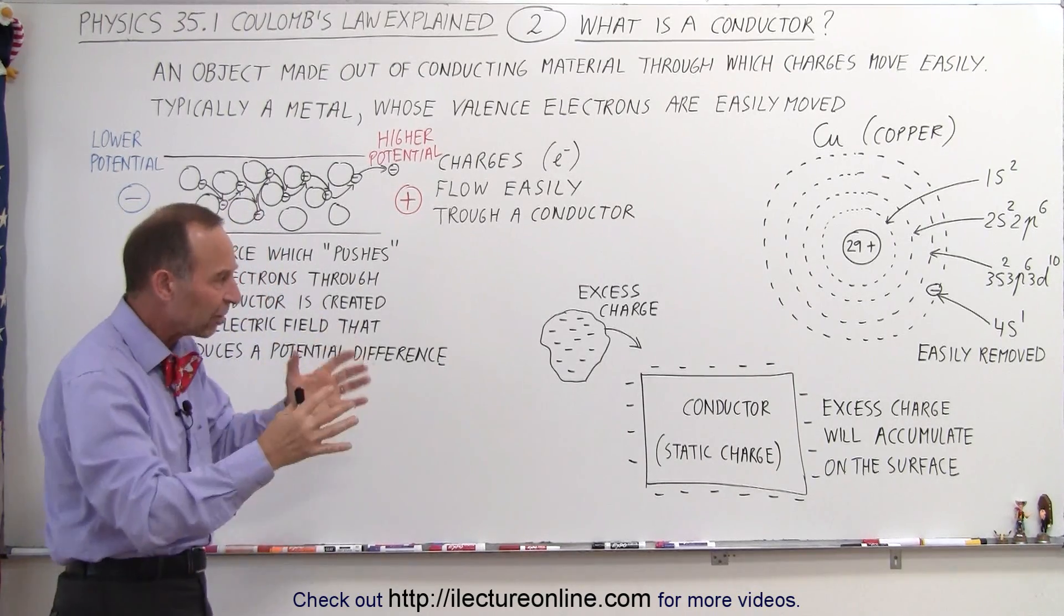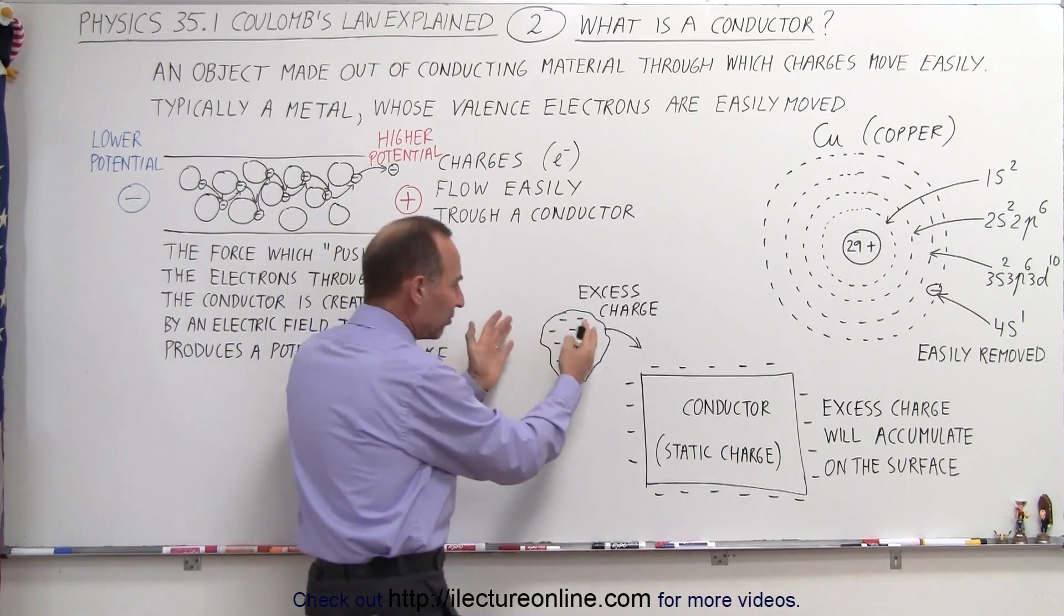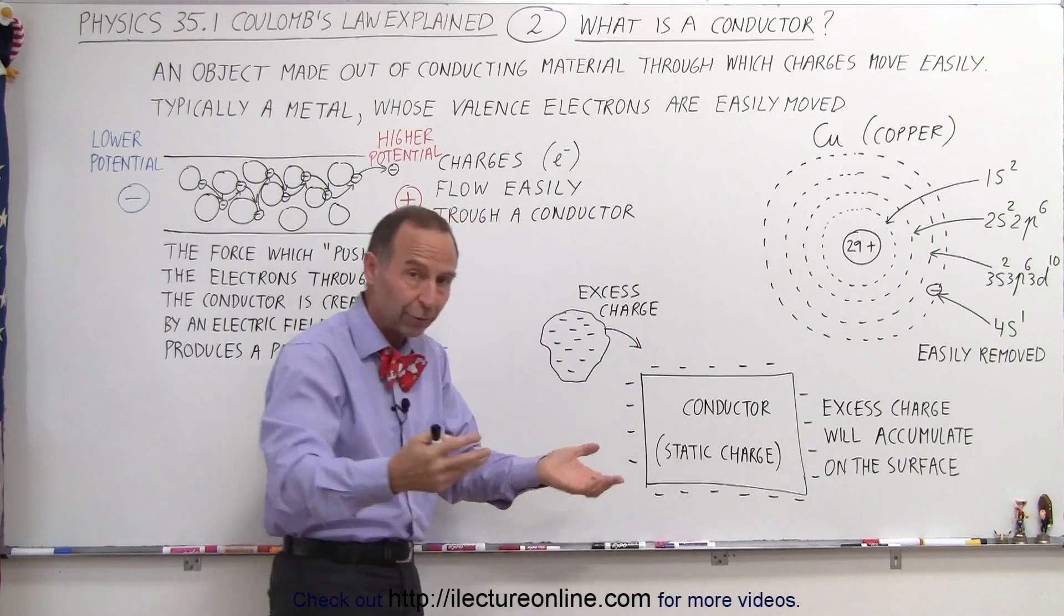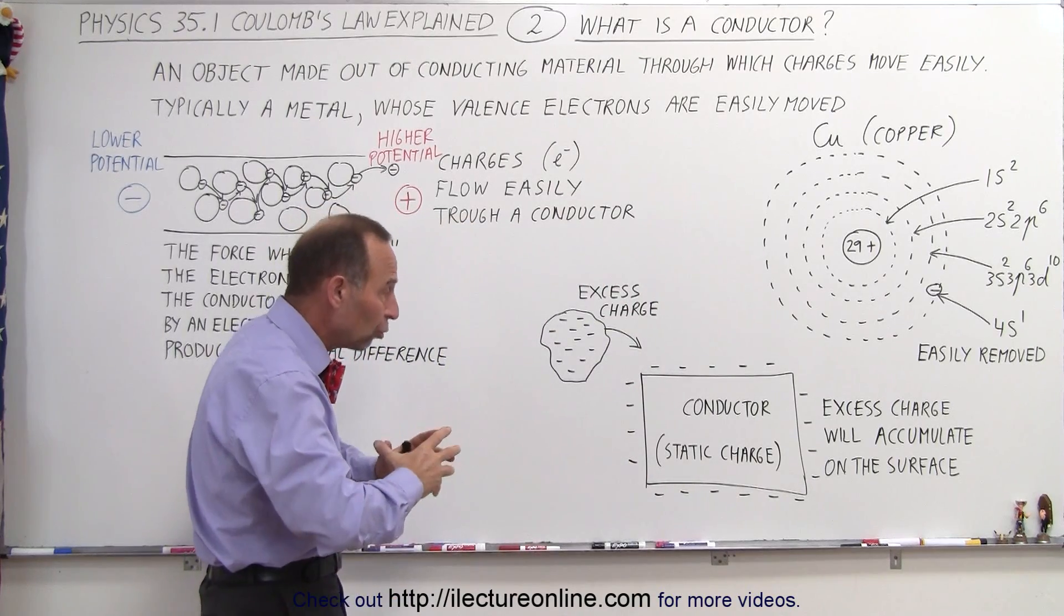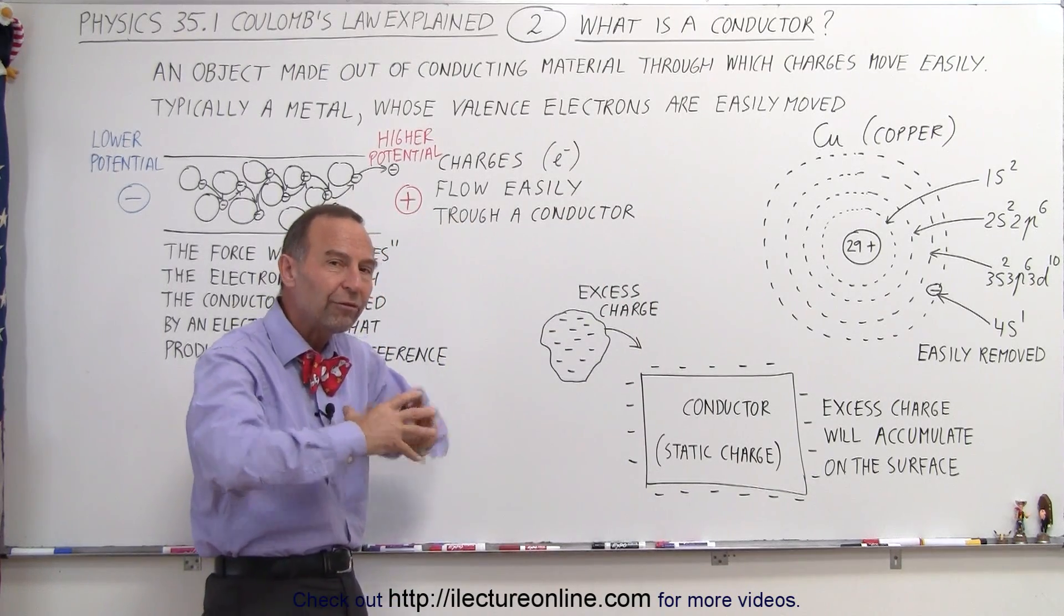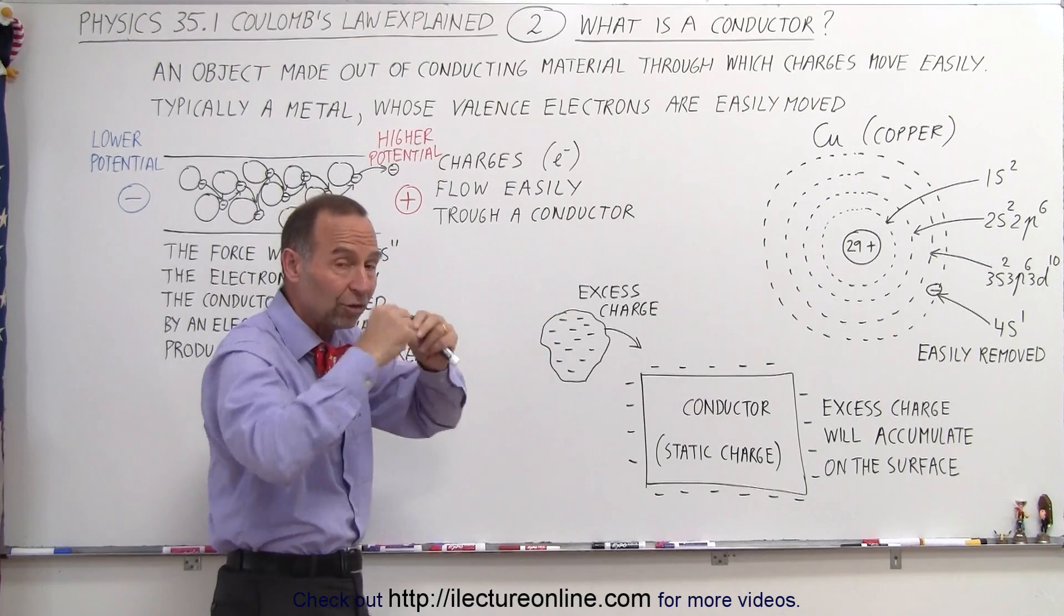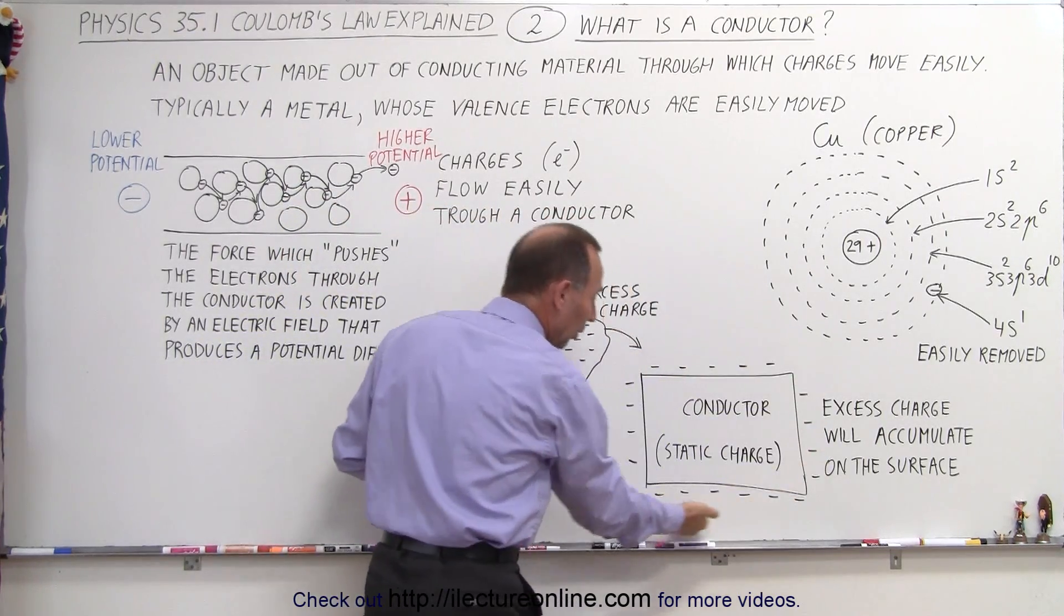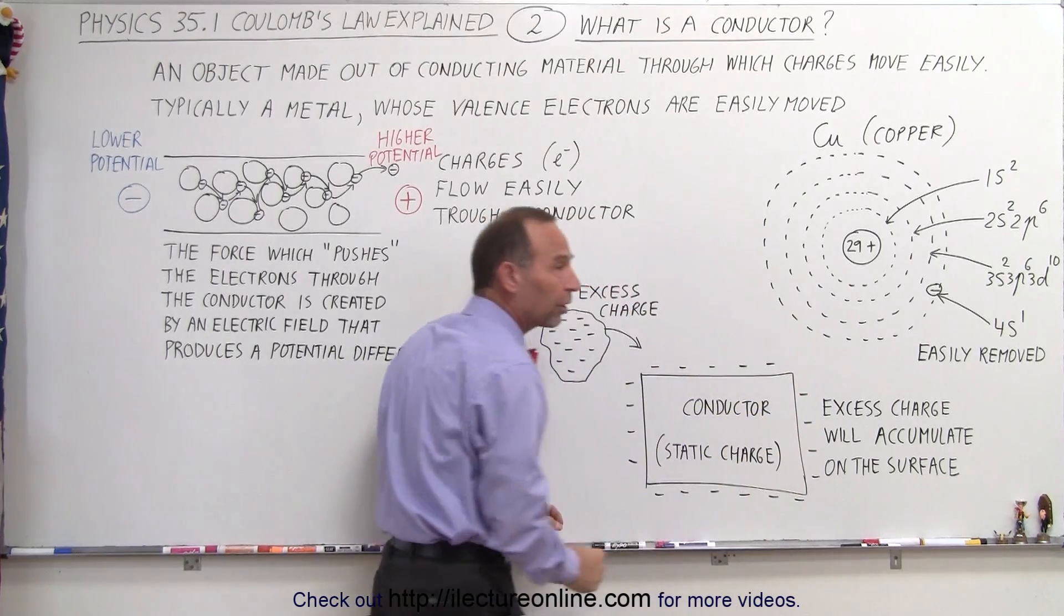Now, if the charges are not flowing, if things are in a static situation, and we take excess charges and we place them on a conducting material, the charges will then almost instantly move to the farthest point they possibly can because those excess charges repel one another. So the charges will end up residing on the surface of a conductor.